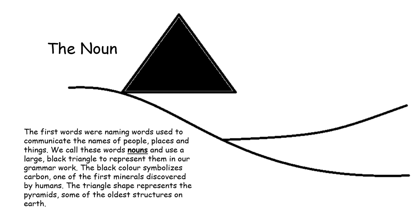The first words were naming words used to communicate the names of people, places, and things. We call these words nouns and use a large black triangle to represent them in our grammar work. The black color symbolizes carbon, one of the first minerals discovered by humans. The triangle shape represents the pyramids, some of the oldest structures on Earth.